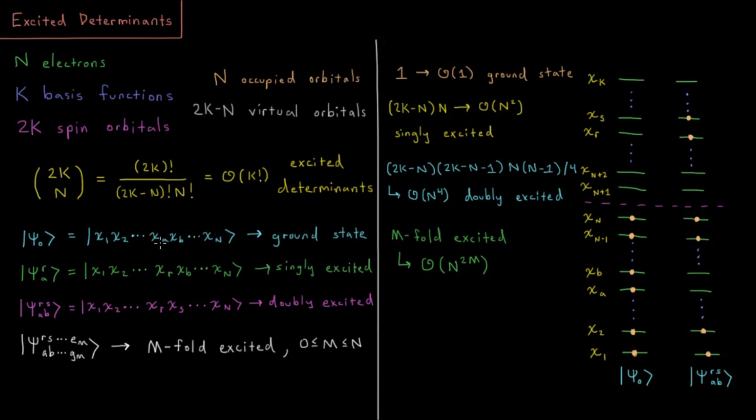If instead we take one electron from spin orbital A, put it up to spin orbital R, where it's some higher energy unoccupied orbital, we would call that singly excited, where there's a single electron we move up from lowest energy to not lowest energy orbital.